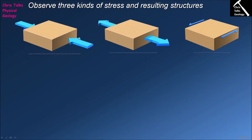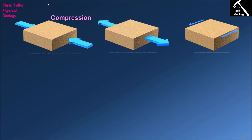When we apply a stress to our rock, we can apply it in one of three ways. The stress can either be compressive, tensional, or shear stress. In the case of compressive stress, we are literally squishing our rock — compressing it. This is the kind of stress applied to rocks at convergent plate boundaries.